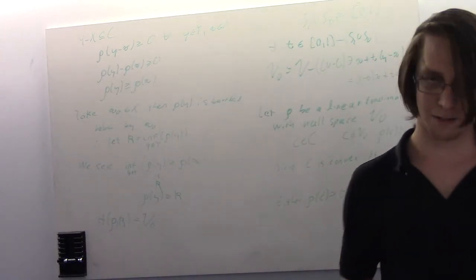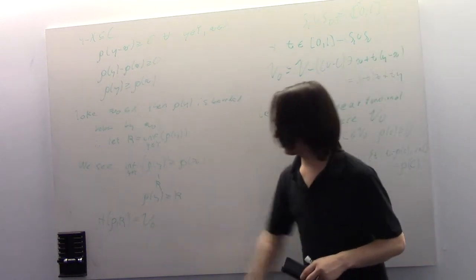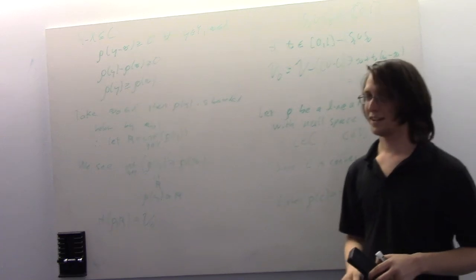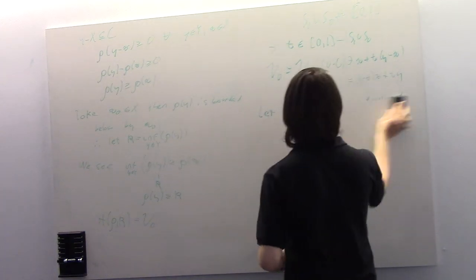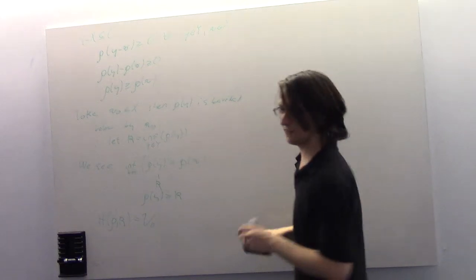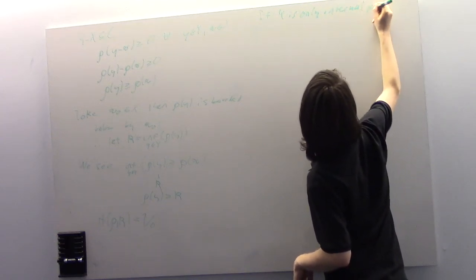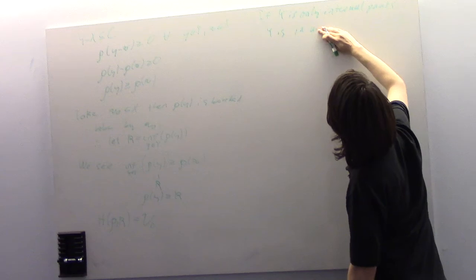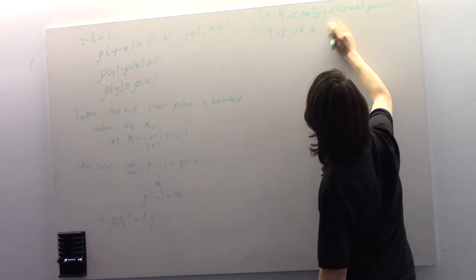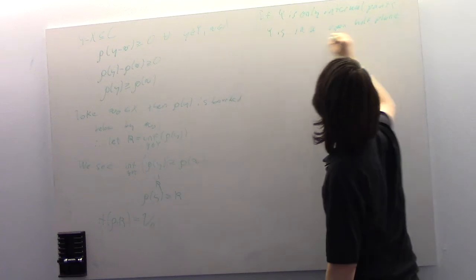Let's recall the Hahn-Banach separation theorem: if X and Y are convex and one of them contains an internal point, we can separate them by a hyperplane. Now we recall one of them had only internal points, so if Y — without loss of generality — was only internal points, then Y is in an open half-plane. This is the next part to solve.